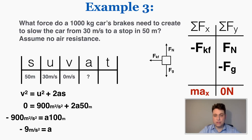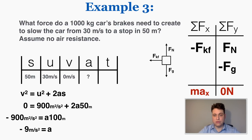I kept the directions consistent with my free body diagram, so I'm considering left to be negative because the force of kinetic friction is negative. The car is moving to the right so the starting velocity is positive, and the displacement is also positive because it's still being displaced to the right. Keeping left and right consistent is really important when solving these problems.